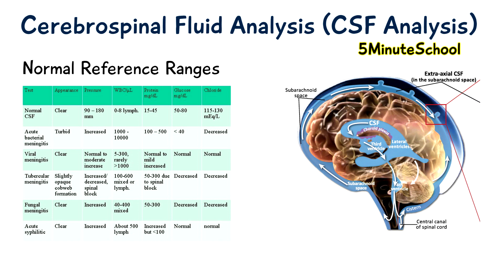The cerebrospinal fluid total protein level is also important. If this number is raised, it may be due to various diseases like polyneuritis, tumours, injuries, inflammation, or infectious diseases.